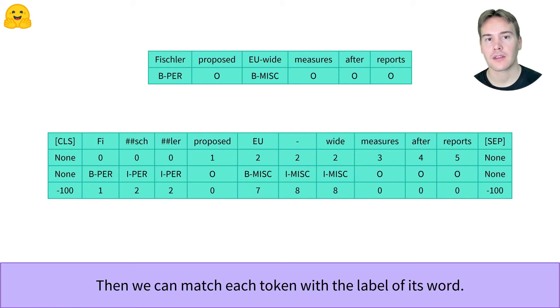The special tokens get a label of minus 100, which is how we tell the transformer loss functions to ignore them when computing the loss.